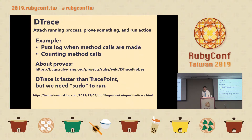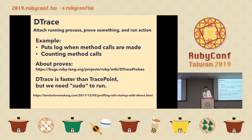And dtrace — dtrace attaches to a running process and probes sourcing and runs actions. For example, we can put a log when method calls are made and count method calls. All probes are listed on the documentation page. dtrace is faster than TracePoint, but you need sudo to run it. Aron-san knows dtrace very well, so if you have questions, ask Aron-san.